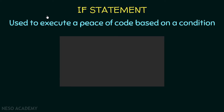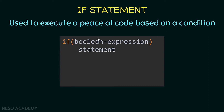What is the if statement in Java? It is a statement that is used to execute a piece of code based on a condition. We will use the if keyword followed by parentheses, and inside the parentheses we will put the boolean expression or condition. After that we will have one statement. So if the boolean expression evaluates to true, this statement will be executed.